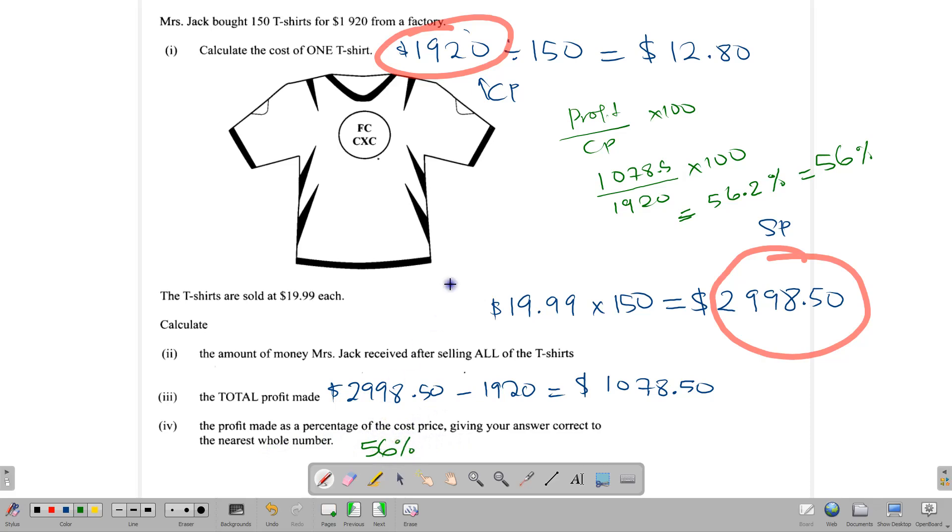So our profit percentage to the nearest whole number is 56%. And these are likely how you are going to come across profit and loss, because these questions are normally given in the context of a question. So on your CXC paper, paper two especially, this is how you're likely to see it.